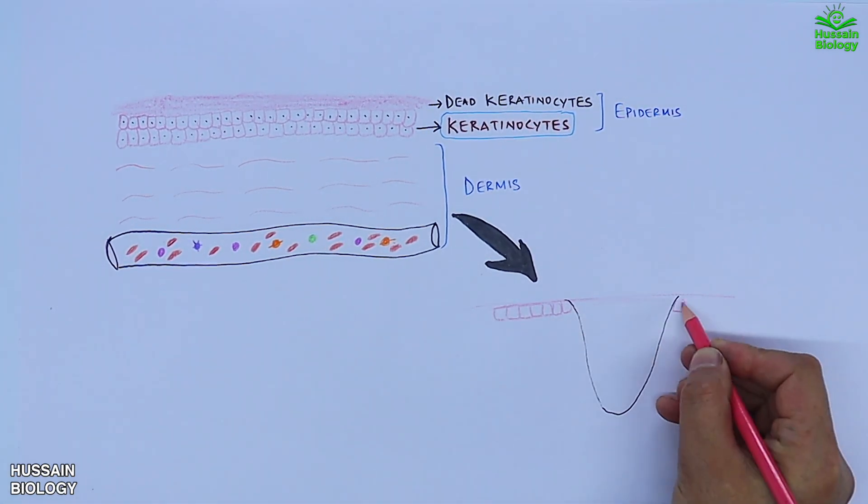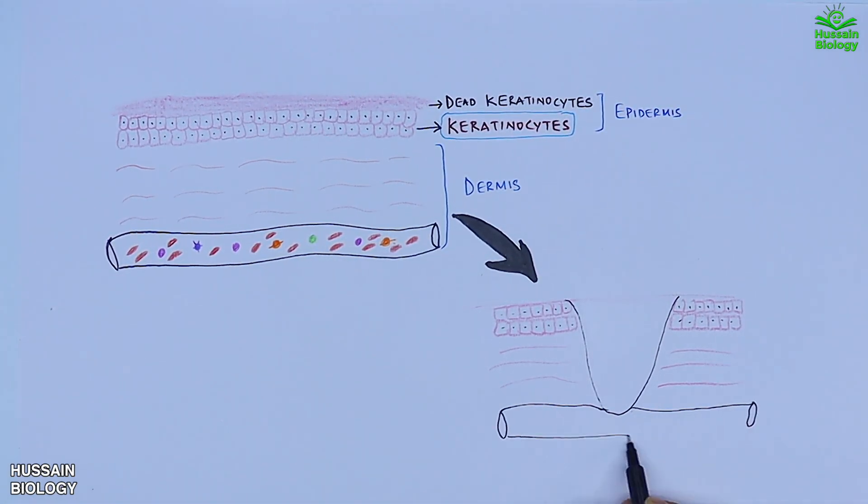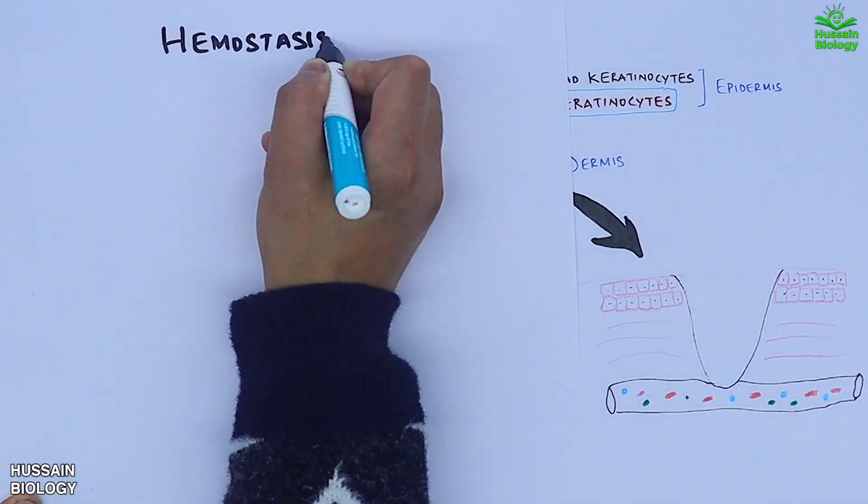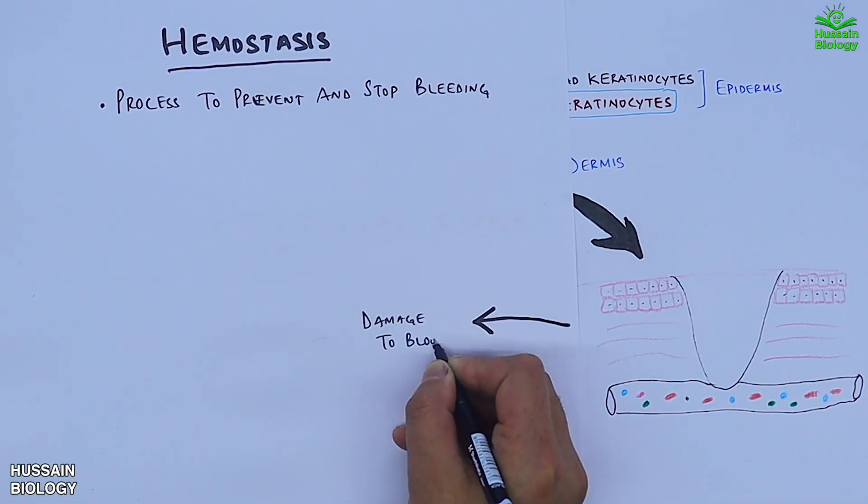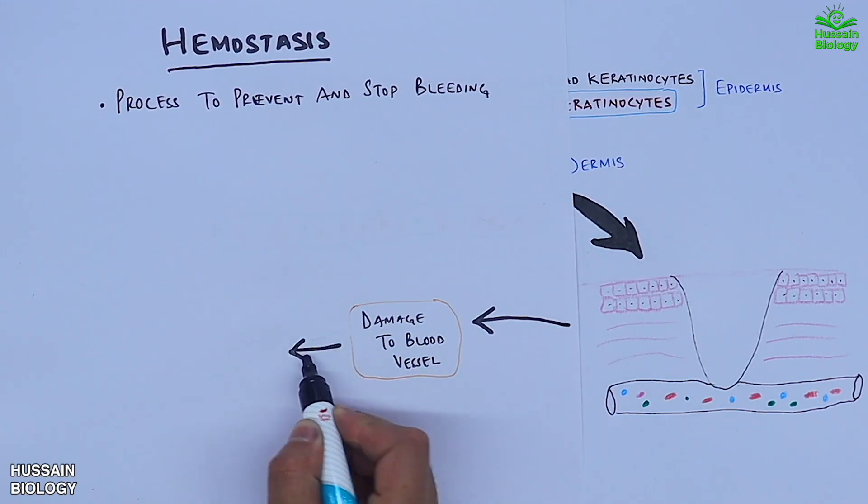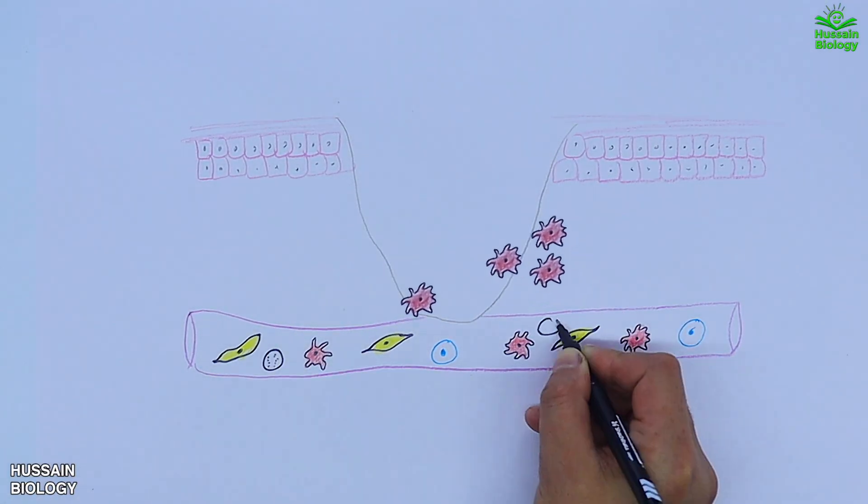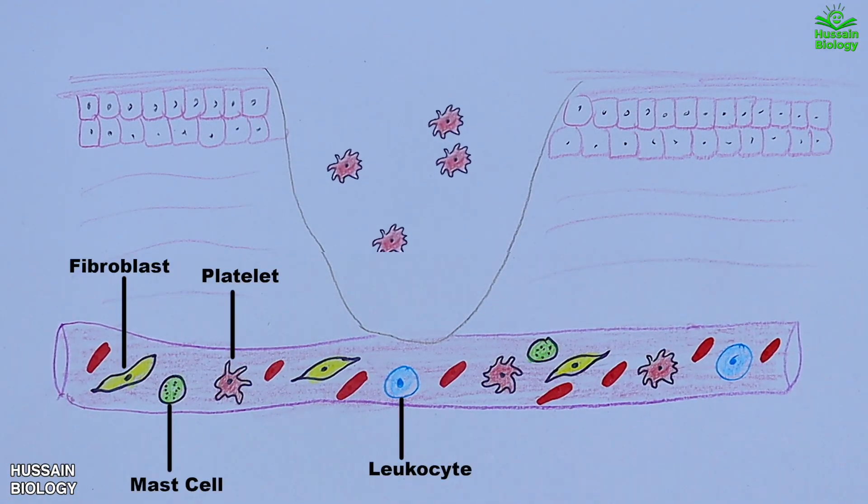Then the hemostasis comes into play, where first of all when the damage to the blood vessel is sensed, the vasoconstriction is mediated. After that, the platelets are recruited to the wound site as shown in the animation.